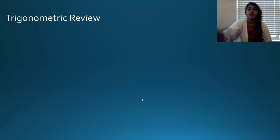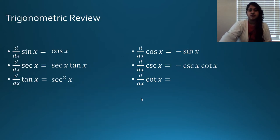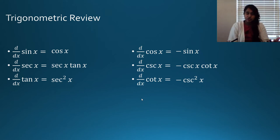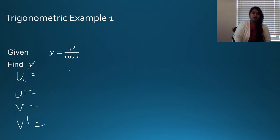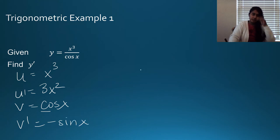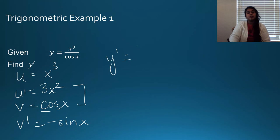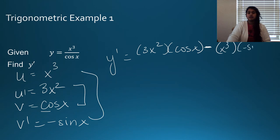Let's move on to trig. Recall your trig derivatives — I'm putting up the same slide as before. Memorize, memorize, memorize. Know your trig. For the first example, u is x cubed, u prime is 3x squared, v is cosine x, v prime is negative sine x. So y prime equals 3x squared times cosine x, minus x cubed times negative sine x, all over cosine squared x.